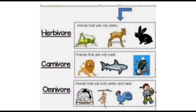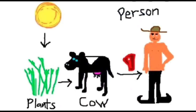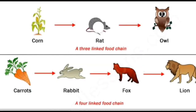For example, we have humans eating cow's meat, which is beef, and the cow eats grass, which is a plant. Next, we have a food chain that shows an owl eats the rat, and the rat eats the corn.